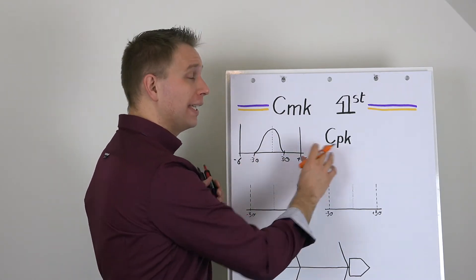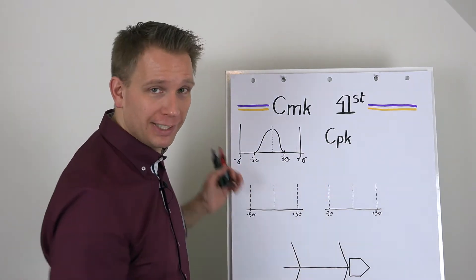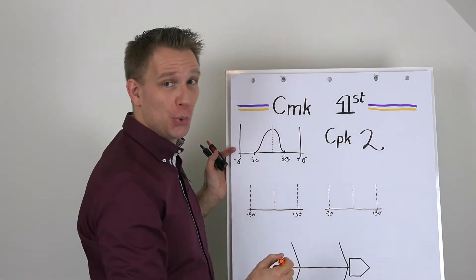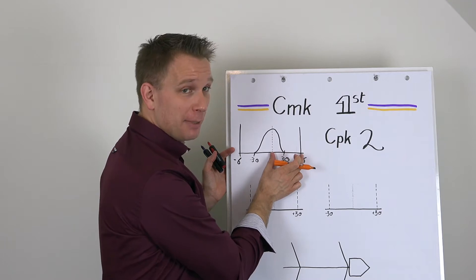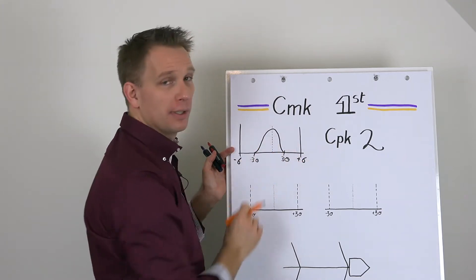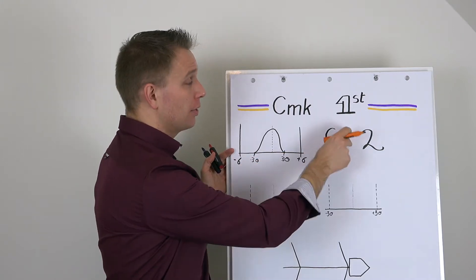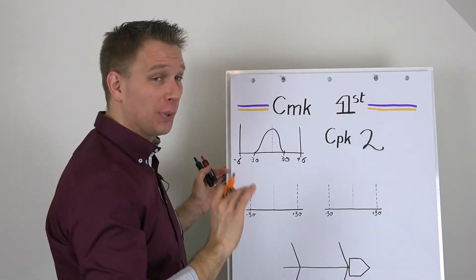Now, this will lead to a CPK of, yell it with me, two, because six sigma is twice the three sigma. By the way, if your process is not centered, your CPK will drop. So keep that in mind.